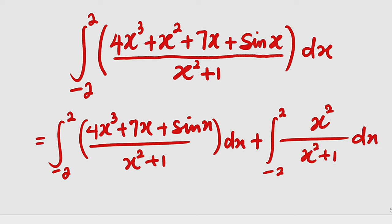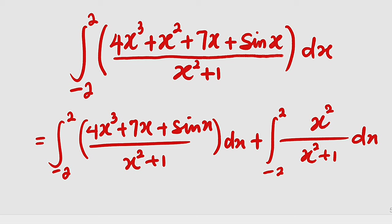But we are not going to conclude that the first integral is equal to 0 just yet. We have to check whether it is really odd or not. Remember: if a function is odd, substituting x with negative x transforms it to negative f(x). If it is even, f(negative x) equals f(x).